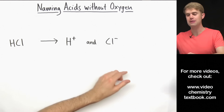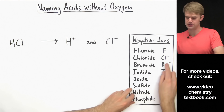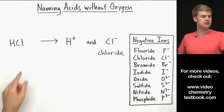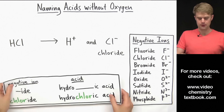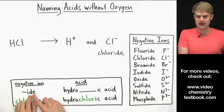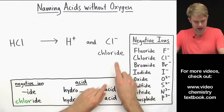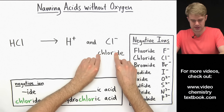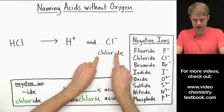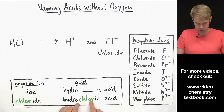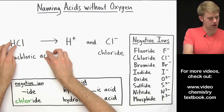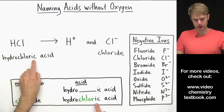The negative ion we're working with here is Cl-, which we call chloride. To name this acid, we use this rule: if the negative ion ends in -ide, you take off the -ide and stick the stem between 'hydro' and 'ic.' So chloride — we take off the -ide and put 'chlor' between 'hydro' and 'ic.' So we call HCl hydrochloric acid.